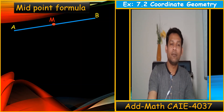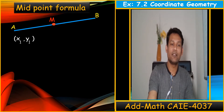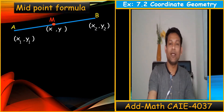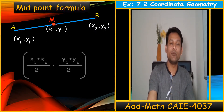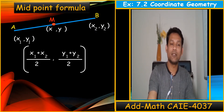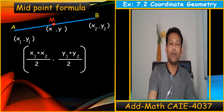In this line, M is the midpoint between A and B. The coordinates of A are (x1, y1) and B are (x2, y2), then the coordinates of M will be (x, y). The midpoint formula is: x = (x1 + x2) / 2, y = (y1 + y2) / 2.